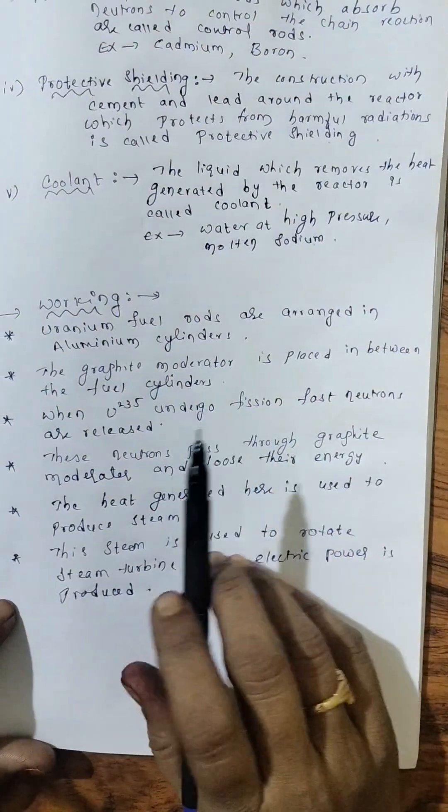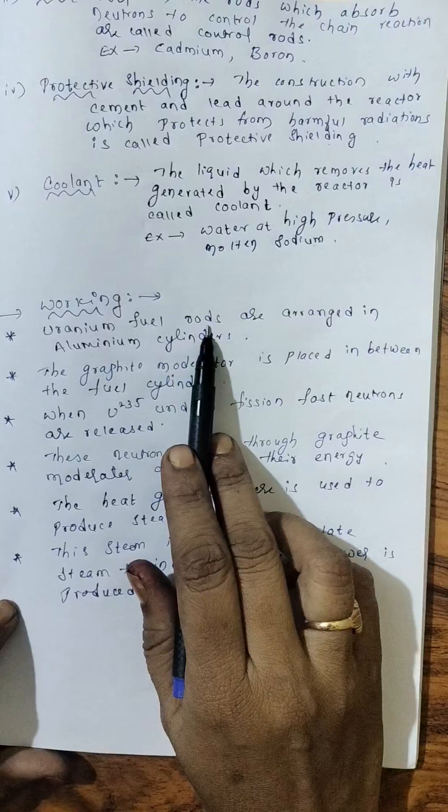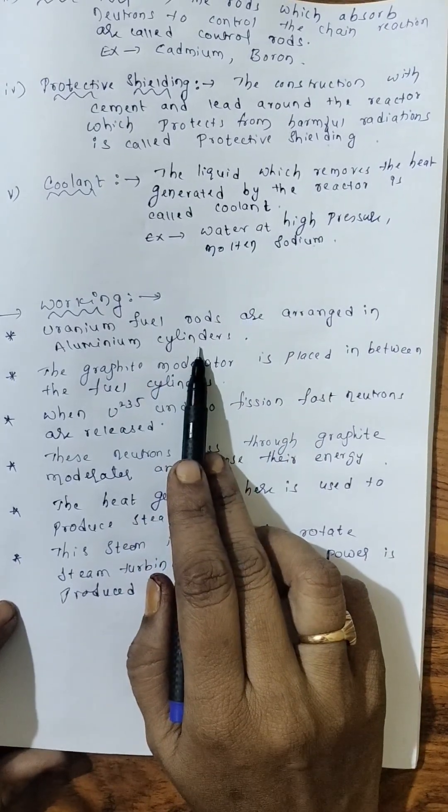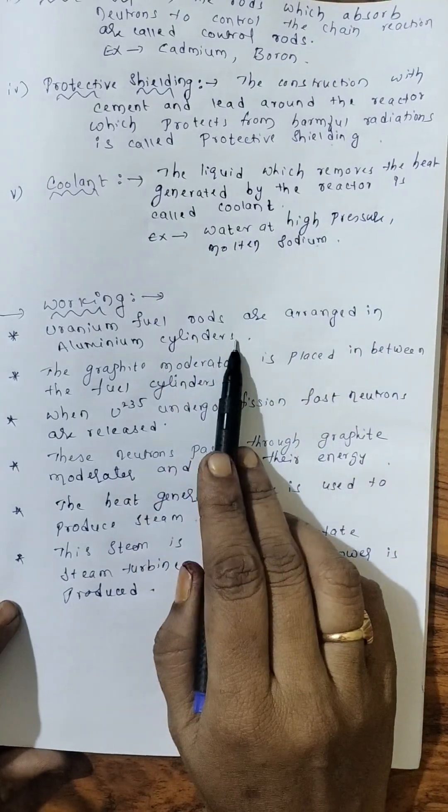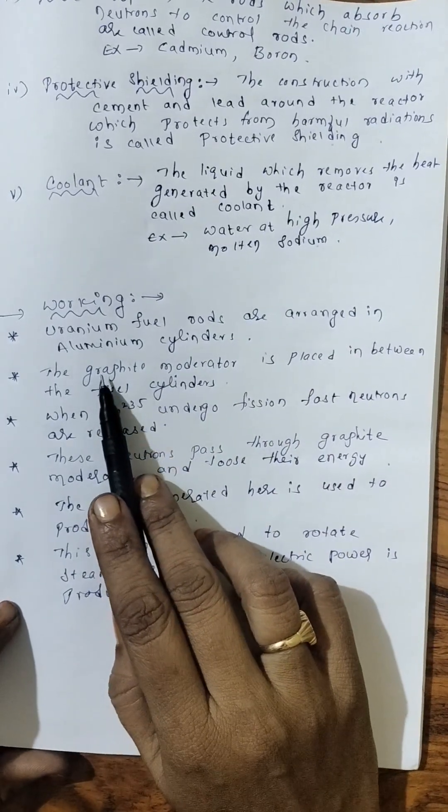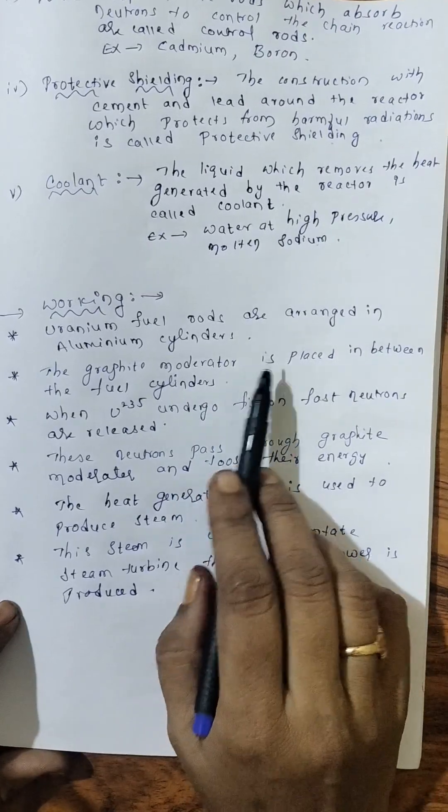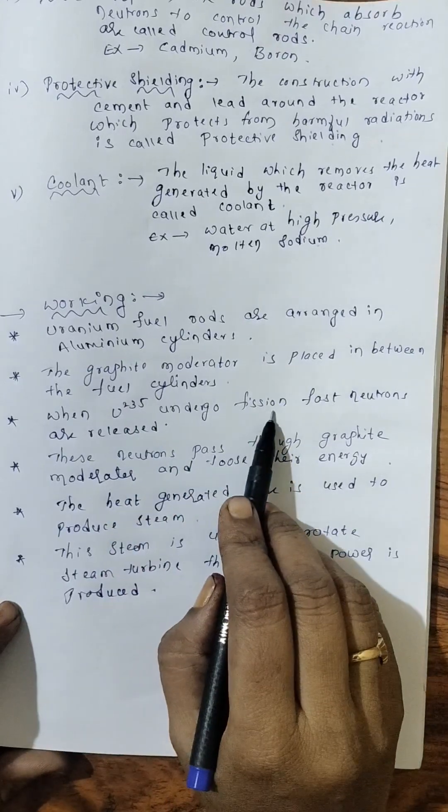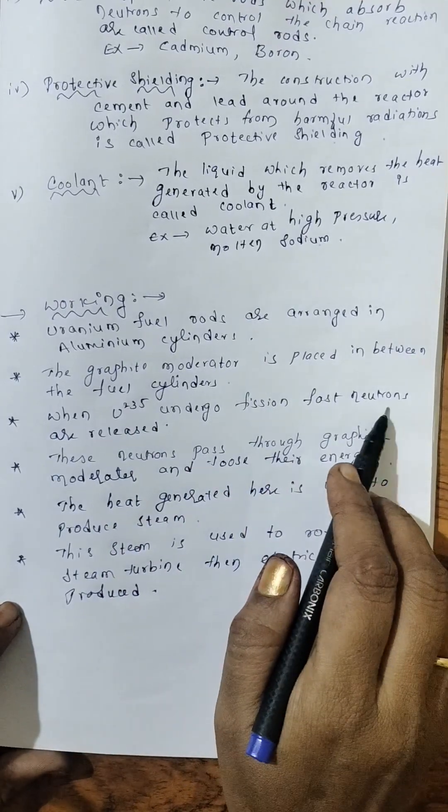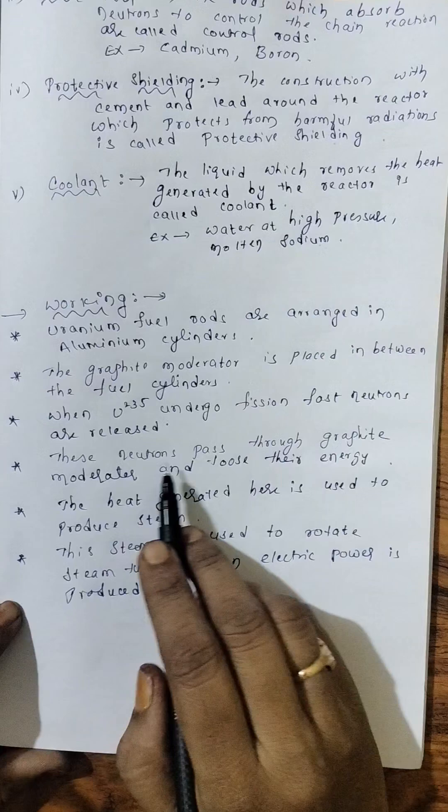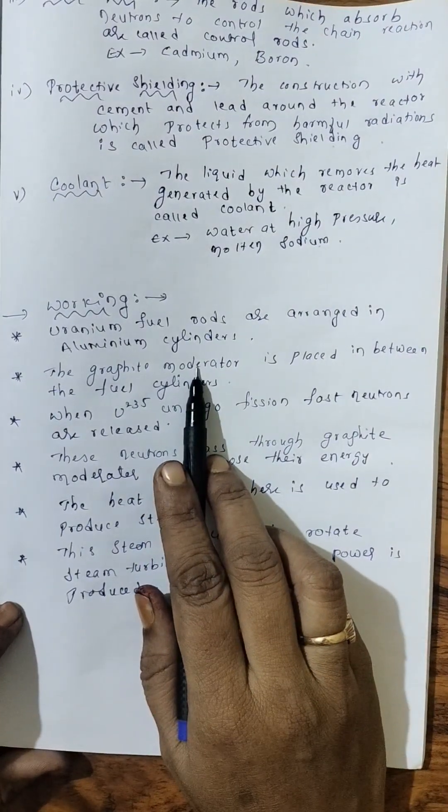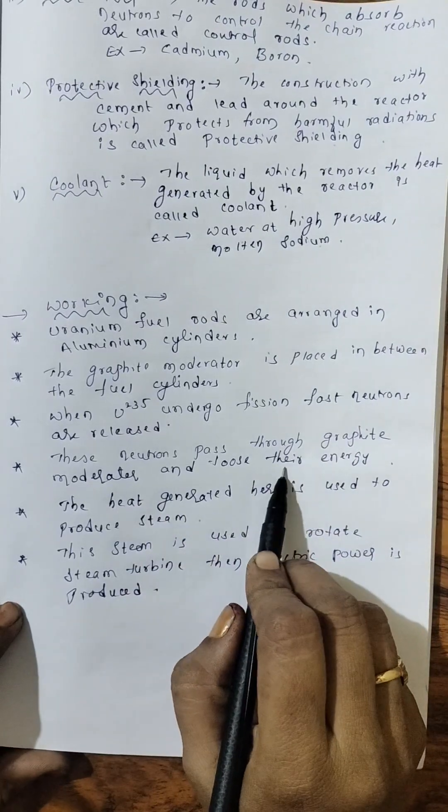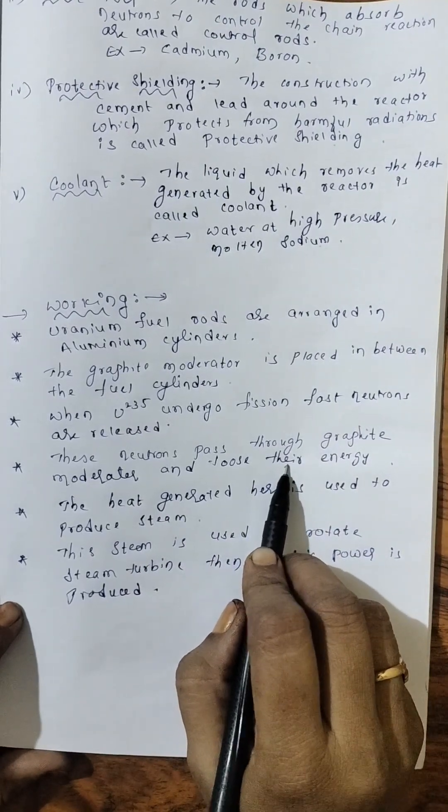Now, working. So first, uranium is converted into rods and that rods are placed in aluminum cylinders. Uranium fuel rods are arranged in aluminum cylinders. Next, the graphite moderator is placed in between these fuel rods. Now, when uranium undergoes fission, as usual, first neutrons are released. Now, these neutrons pass through this moderator graphite so that they lose their energy and they slow down.